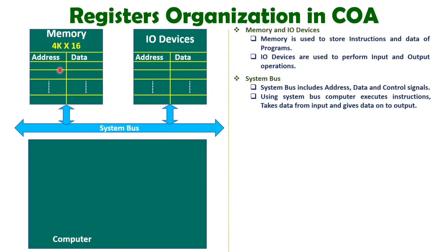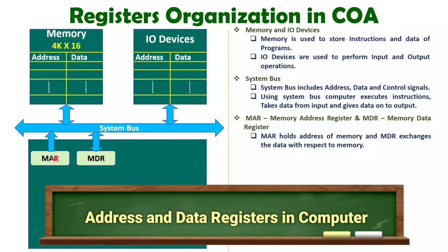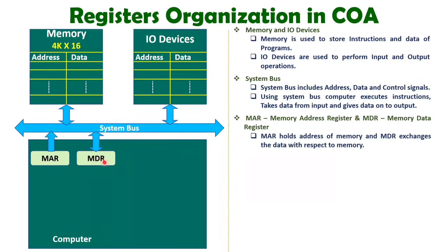The program will be stored inside memory in the form of instructions, and with respect to each address, instructions will be stored in binary. The memory address register holds the address of memory and is directly connected to the memory address lines. When a memory read operation is given, the data at that address comes inside the memory data register. So the memory address register holds the address, and the memory data register can give and take data to and from memory.